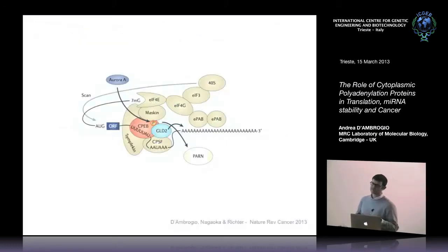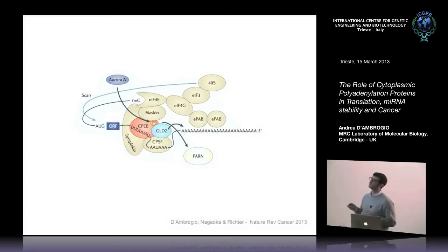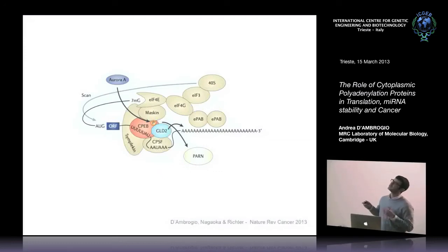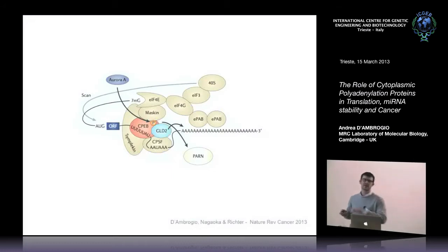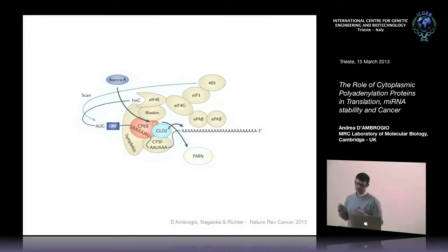This is just a simplification of what happens — there are many more factors I will not go into detail here. But at the end, the goal is to recruit the 40S subunit of the ribosome to scan the 5' UTR of the mRNA to find the right start codon and start translation.